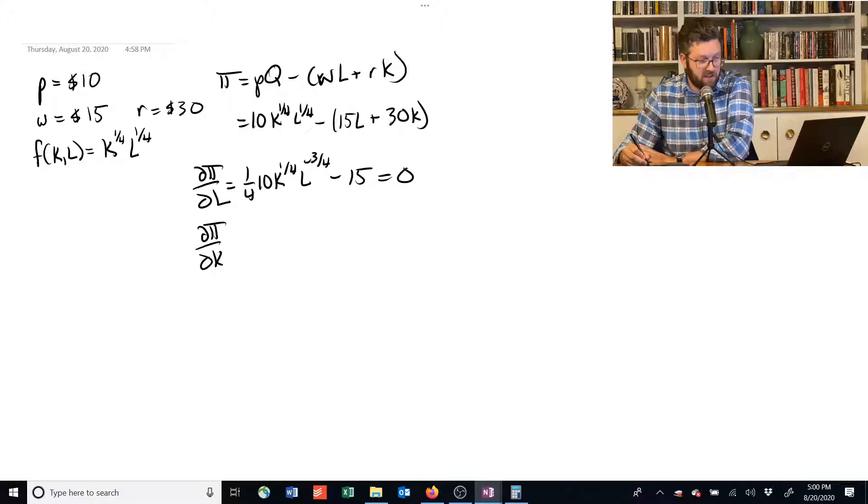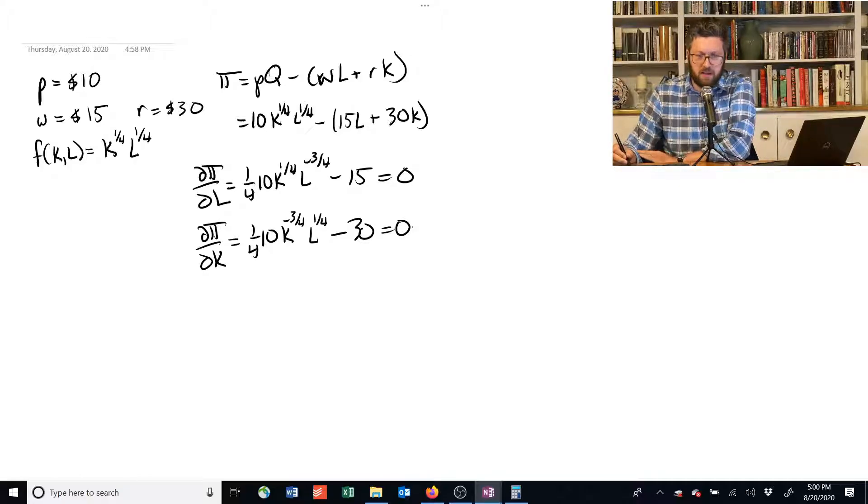Now we're going to take the derivative with respect to capital. We've got to move the 1/4 in front. We've got 10, and we subtract 1 from the exponent on K and we get negative 3/4. And we have L to the 1/4, minus the derivative of 30 times K, which is 30. We set that equal to 0. All right, two big ugly equations to solve.